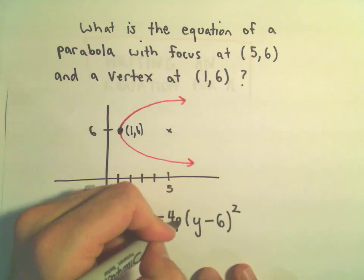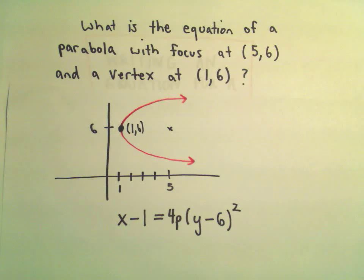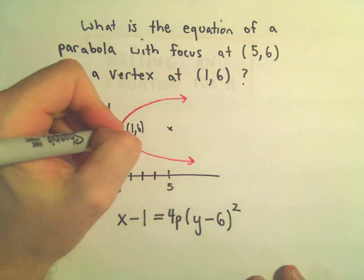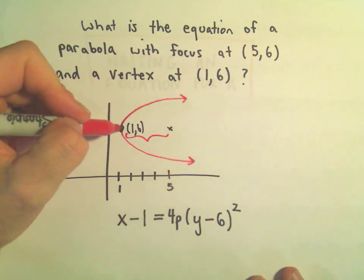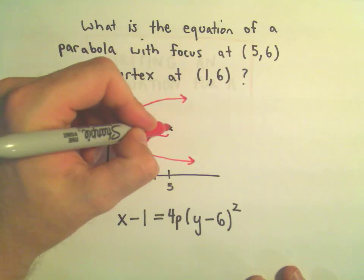But in front of this, I'm going to put my value for p. And again, all p represents is, p is the distance from my vertex to my focus.